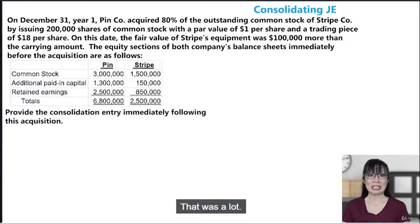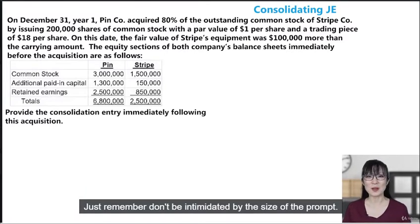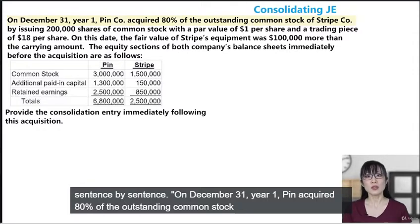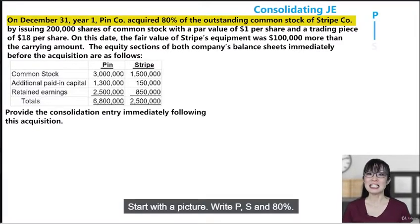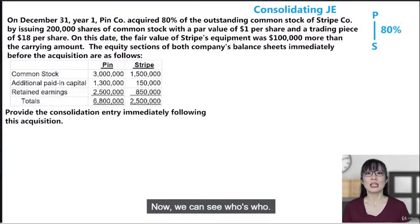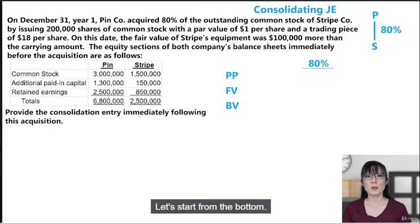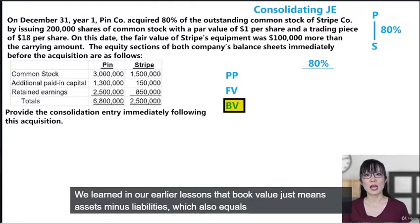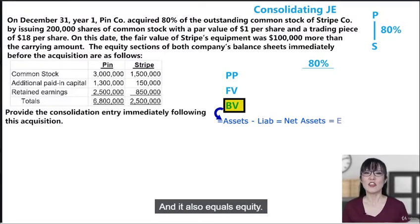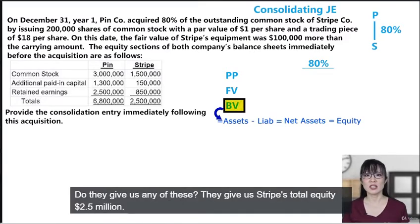Don't be intimidated by the size of the prompt — just break it down sentence by sentence. On December 31st, Year 1, Pin acquired 80% of the outstanding common stock of Stripe. Start with a picture: P, S, and 80%. Now set up for our calculations: book value at the bottom, fair value in the middle, and purchase price at the top, noting the 80% percentage. Book value just means assets minus liabilities, which also equals net assets and equity — they all equal the same thing. Stripe's total equity is $2.5 million, so that's book value.